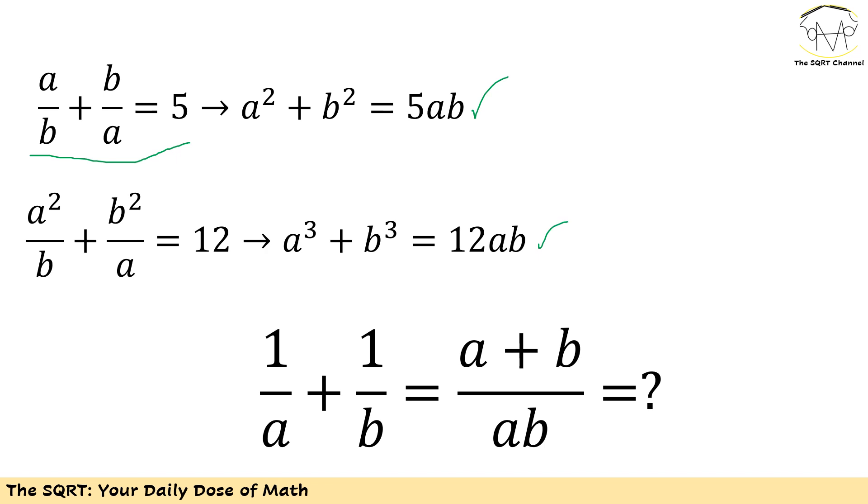Now what I need to find is 1/a + 1/b. Remember this can be simplified as (a + b)/ab. Now take a look at a and b. Basically what I need to find is the sum of a and b and the product of a and b. So it's natural to define a new variable s as the sum and a new variable p as the product.